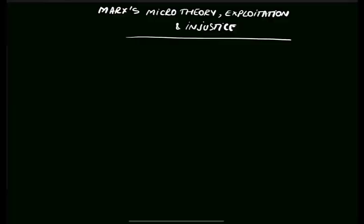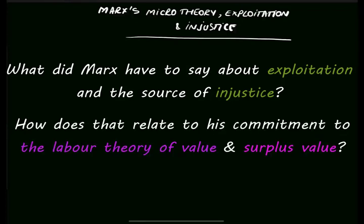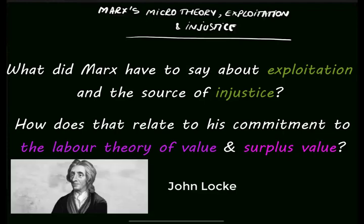There is another important part of Marx's micro theory of capitalism, namely the part where he talks about exploitation and the source of injustice. In order to understand Marx's views on exploitation, we need to go back and talk about the labor theory of value and the labor theory of surplus value. The labor theory of value has its roots in John Locke's theory of property and work, but Marx goes beyond John Locke's own account.